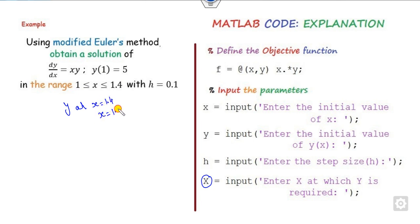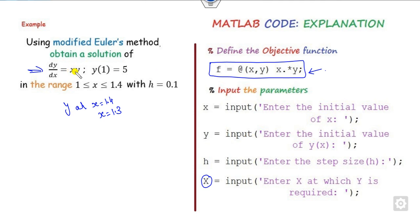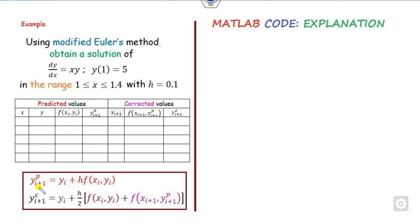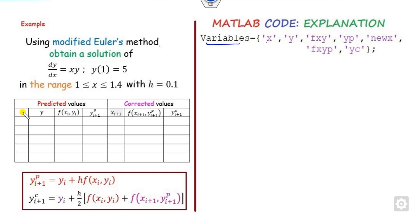If you want to calculate at 1.3, you can write 1.3. Once you define all initialization parameters for each problem, you only need to change this function — because the function is the part you take from the user problem and always change whenever there is a different problem. Now our target is to construct the solution table in MATLAB. You can see x is given, and the formula to use is here. First, define variable names for the headings: x, y, f(x,y), yp, new_x, f(x,yp) — those are my notations; you can choose your own.